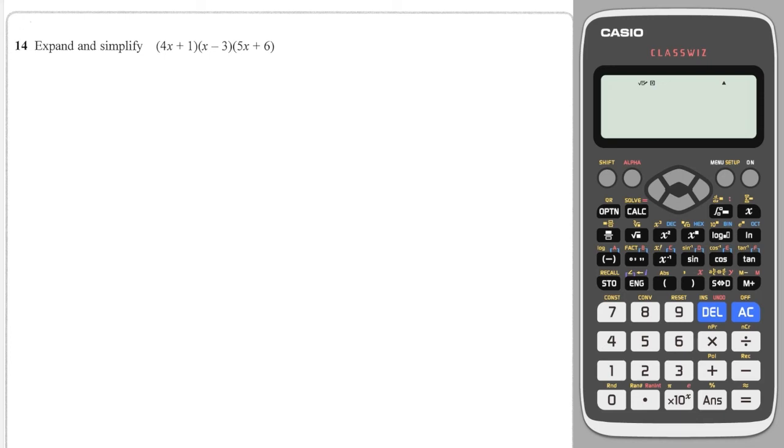Okay, another triple bracket to finish. And again, I'm going to ignore the first bracket and just focus on the last two. I could do my lobster claw method, and this is going to give me 5x squared plus 6x.